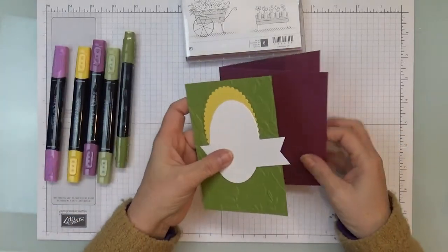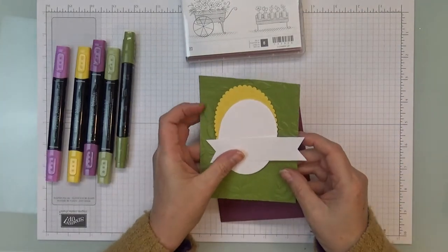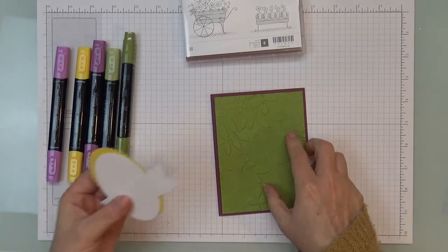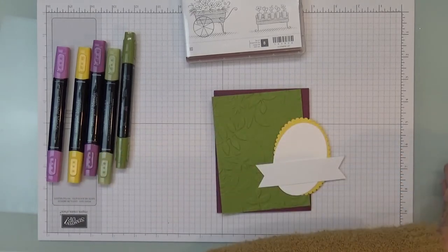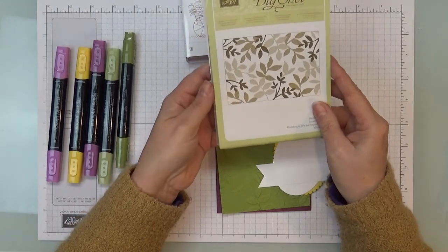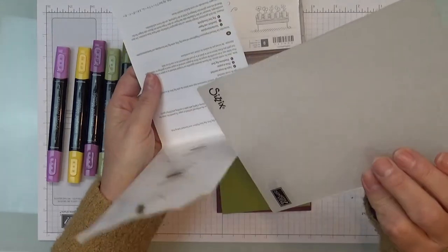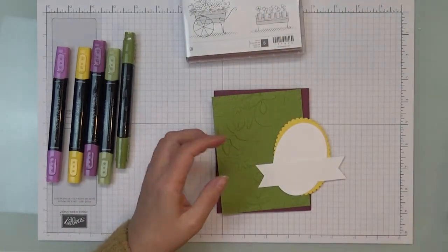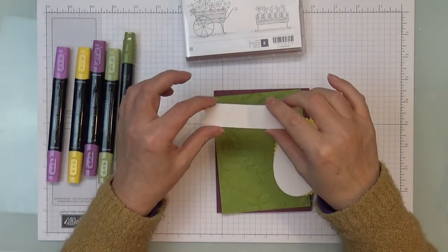So my card base is Rich Razzleberry and then I have a piece of Old Olive and this one I actually embossed with the Layered Leaves Dynamic Impressions folder. So that is this folder here and then I used a piece of Whisper White.